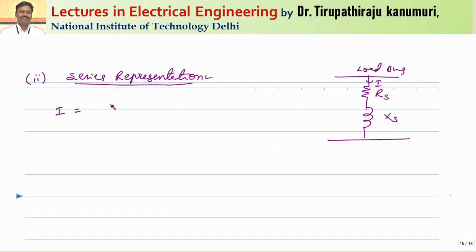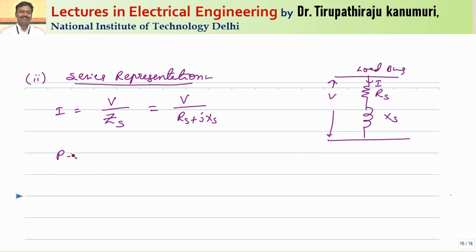The current passing through this impedance equals V divided by Z_s, which equals V divided by rs plus j·xs. From this I can write P plus jQ equals V times I conjugate, because we know power equals V times I conjugate. If you take I conjugate, the difference of angles is taken and you get reactive power as P plus jQ, whereas V times I gives P minus jQ. This is already covered in basic electrical engineering.